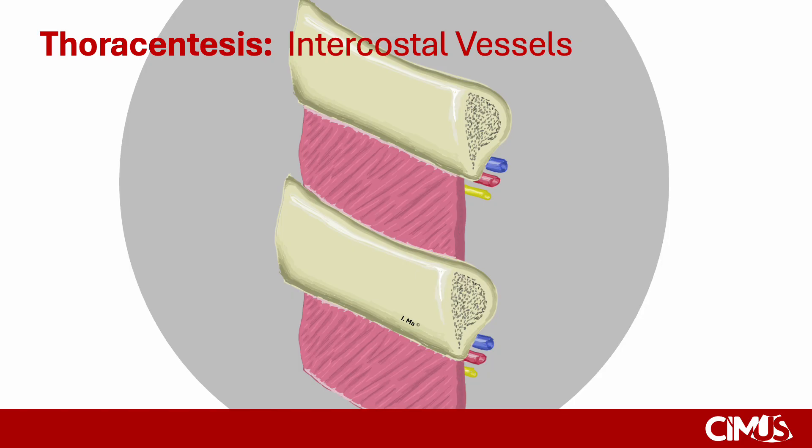In the case of thoracentesis, the relevant vessels are the intercostal vessels, which travel in a bundle containing the intercostal vein, artery, and nerve, typically along the inferior aspect of the ribs, as shown in this diagram.